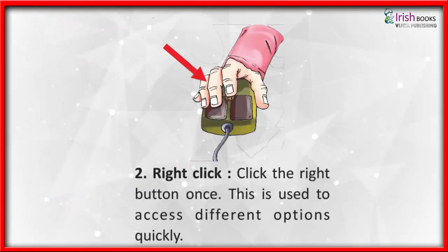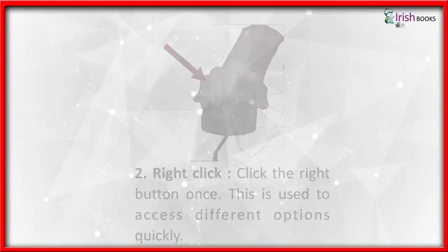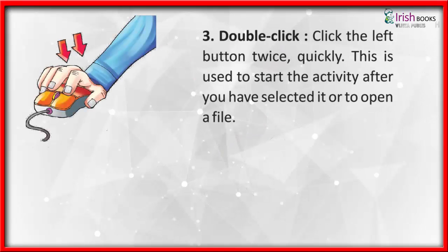Right click: Click the right button once. This is used to access different options quickly. Double click: Click the left button twice quickly. This is used to start the activity after you have selected it, or to open a file.